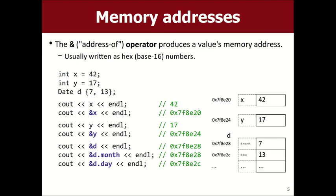Pointers have to do with memory addresses. You probably have some concept of memory — if you make variables, a vector, an int, it goes into the computer's memory. C++ is interesting because for any variable you have, you can actually ask where it's stored in the computer's memory. The way you do that is you write an ampersand in front of the variable's name. The ampersand is called the address-of operator.